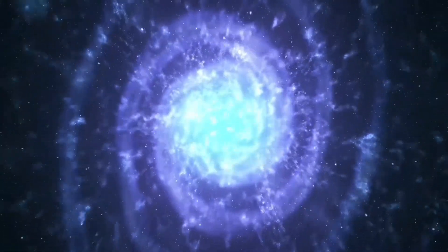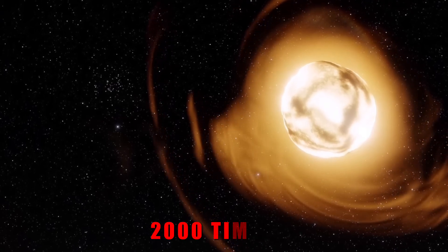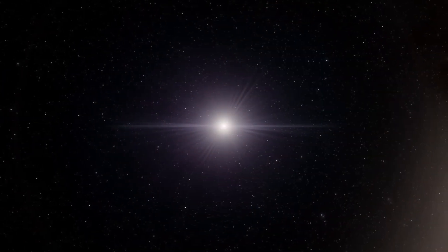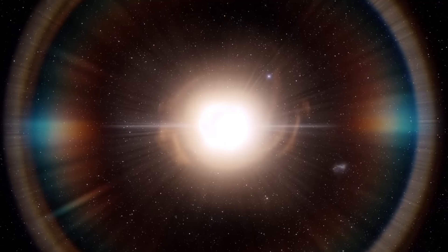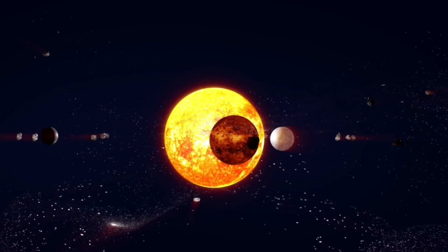Here, stars like the colossal Stevenson 2-18 have been discovered, stretching over 2,000 times the size of our sun. To put that into perspective, if Stevenson 2-18 replaced our sun, its surface would reach far past Saturn's orbit. Imagine a single star filling nearly the entire solar system.